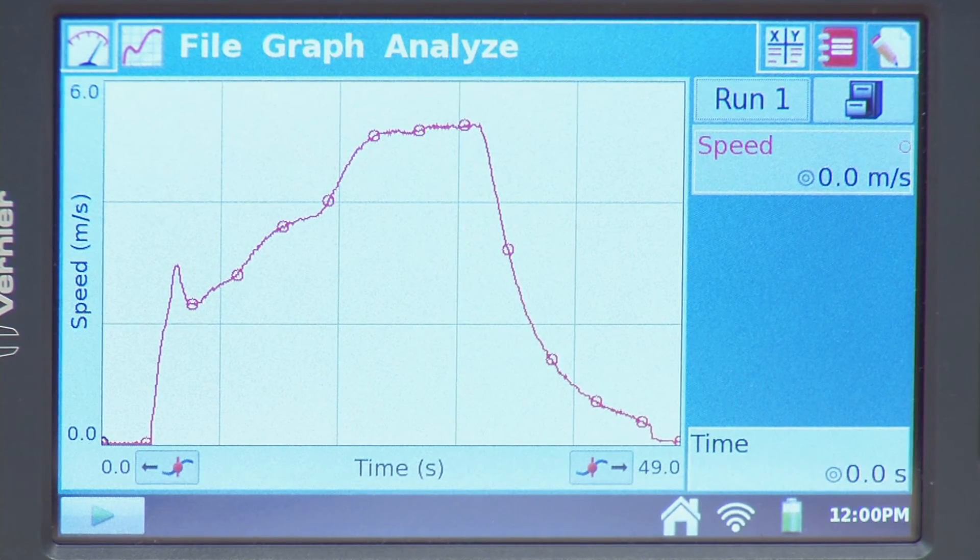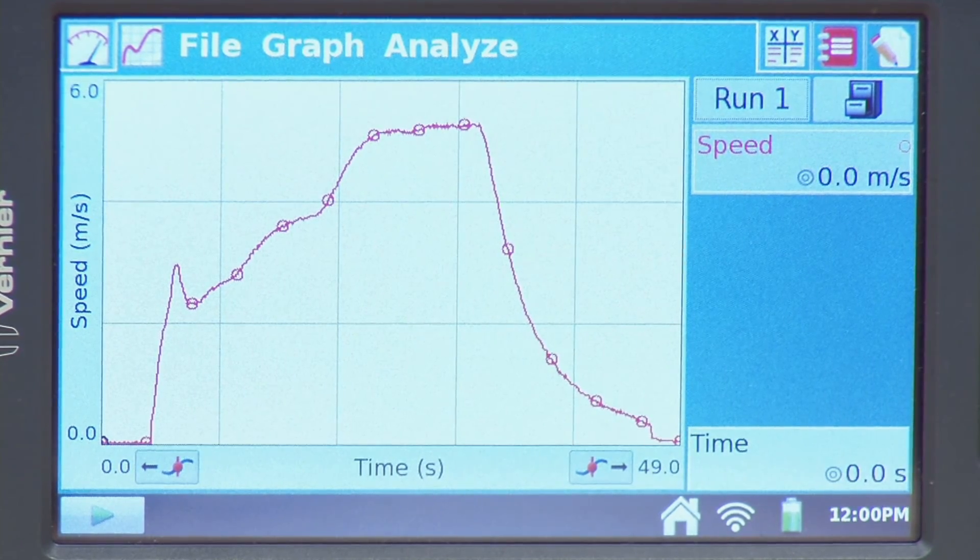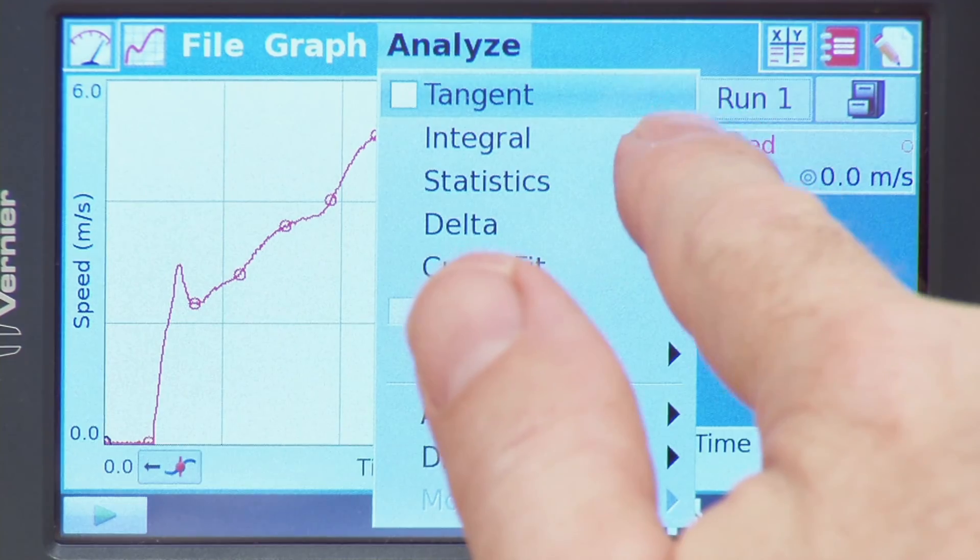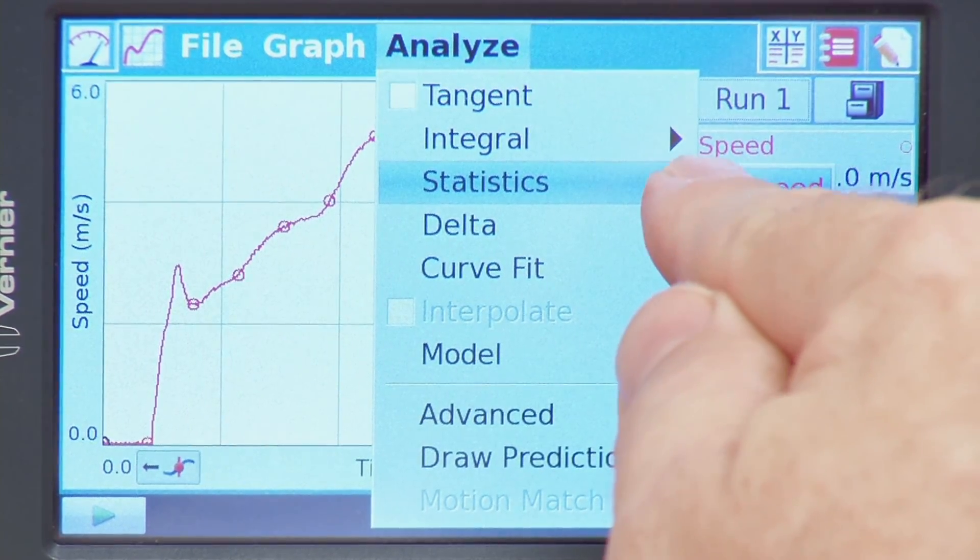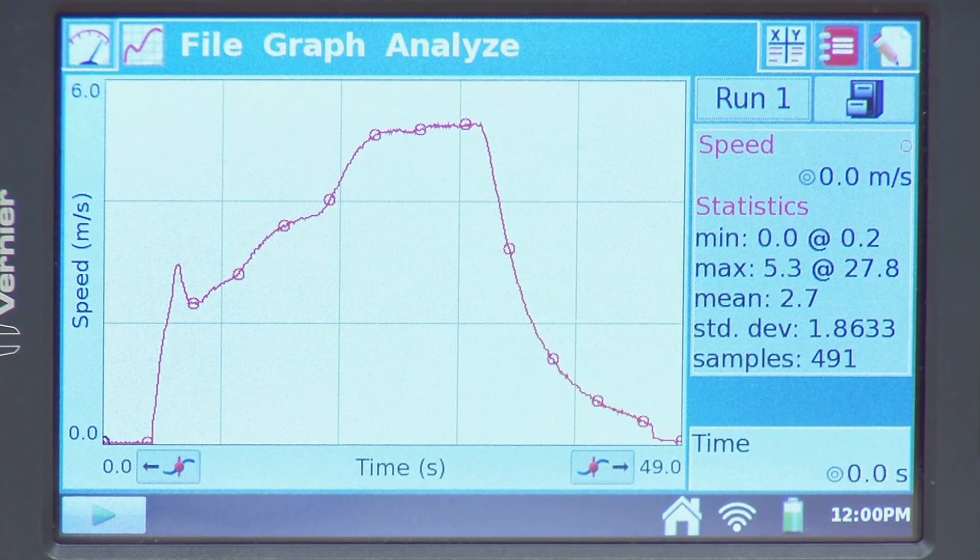We might be interested in knowing what was the maximum wind speed generated by our fan, so we could use some of the analysis features like the statistics function. I can go to the statistics tab there, and we see the maximum wind speed was 5.3 meters per second at 27.8 seconds.